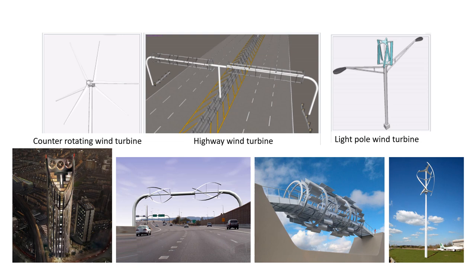Here is a collage of vertical and horizontal axis wind turbines. Some designs are already in application and some are proposed and modeled. These include counter-rotating wind turbines which have two facets both with three blades, highway wind turbines, and light pole wind turbines.